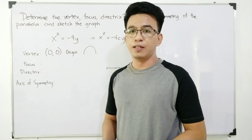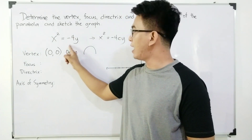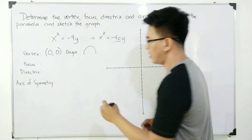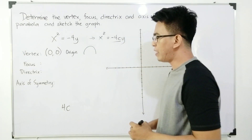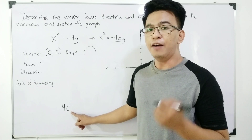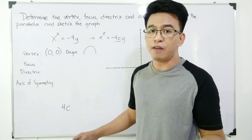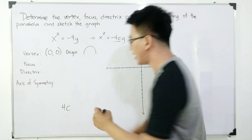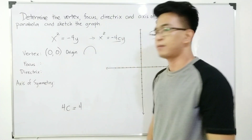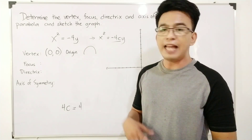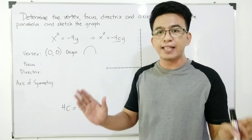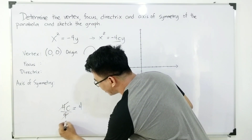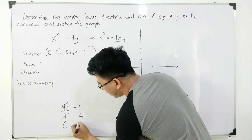Now let's find the focus. We will get the value of 4c. The variable c is the distance of the focus from the vertex, as well as the distance of the directrix from the vertex. Your 4c here is 4 — we use the positive value because we are dealing with length or distance, so no negative values. If you divide 4c by 4, you get c, and the value of c is equal to 1.